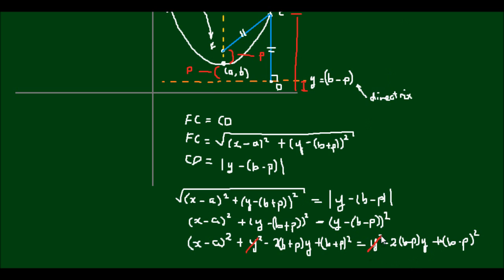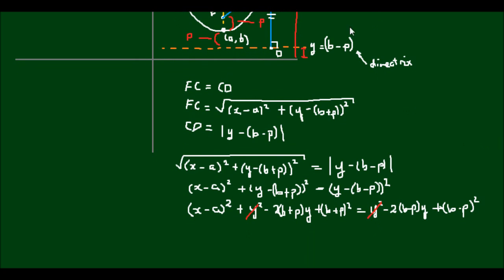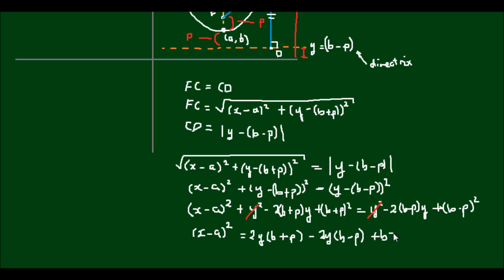The y² terms on each side of the equation cancel. Leaving (x - a)² alone and moving all other terms to the other side, I get (x - a)² equal to 2(b + p)y - 2(b - p)y plus (b + p)² minus (b + p)² ... correcting the sign, minus (b + p)² and minus (b - p)².